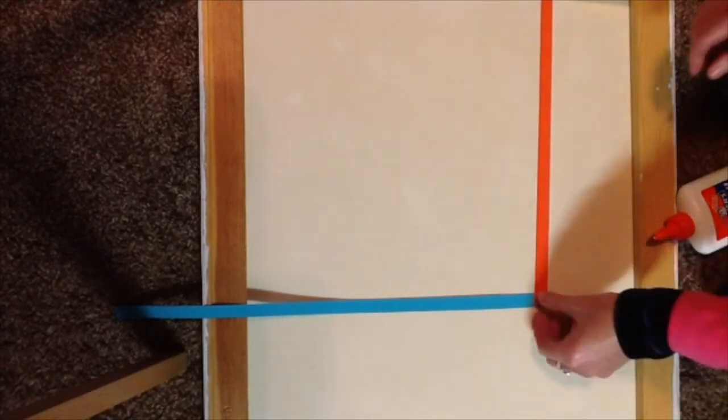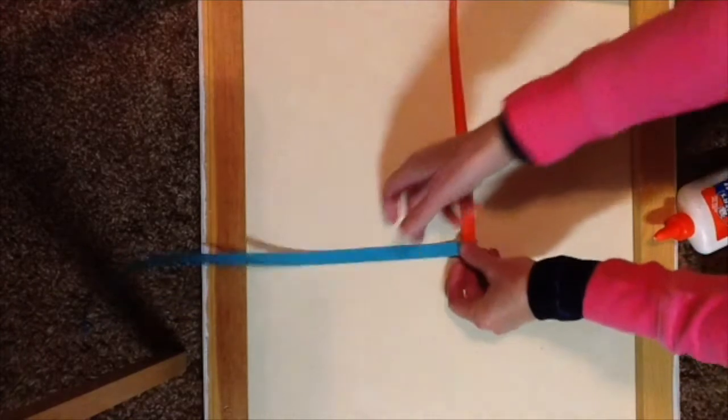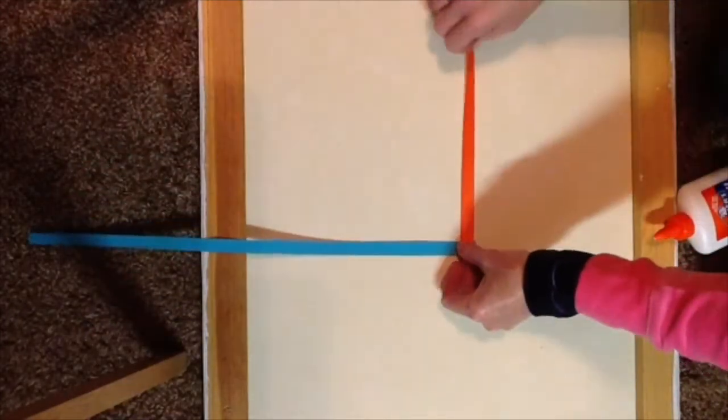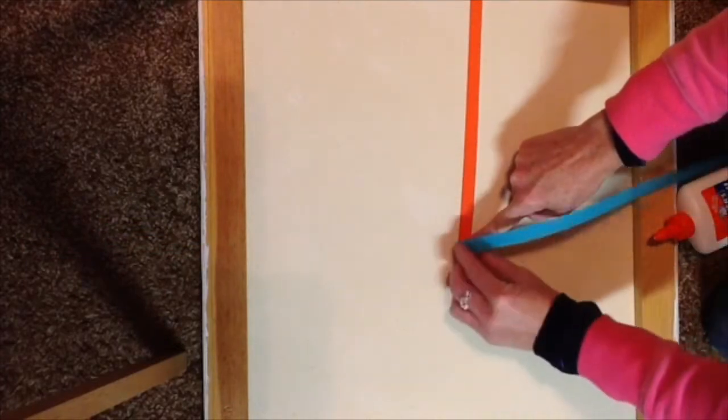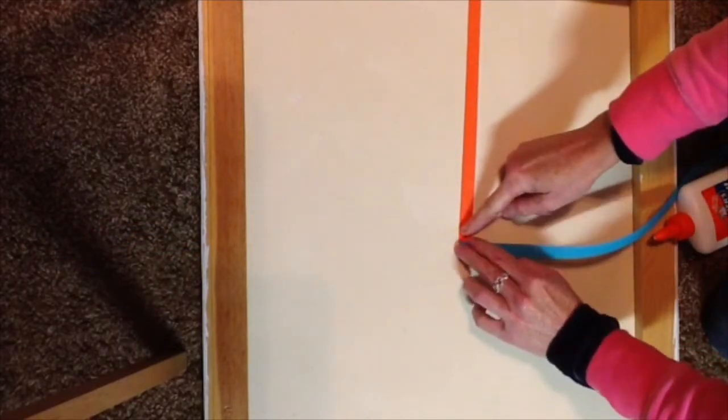Then determine which strip is on the bottom, and that's going to be the one that you're going to fold over the top. So in this case it's blue. Fold the blue over the top of the orange and press down.